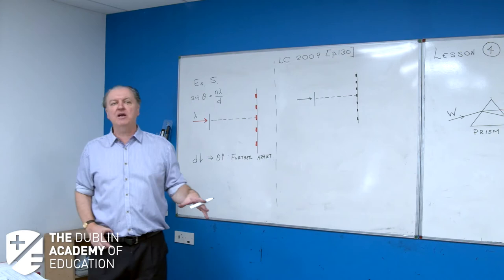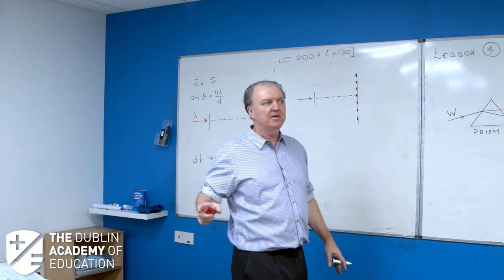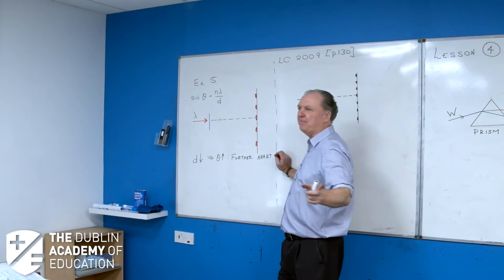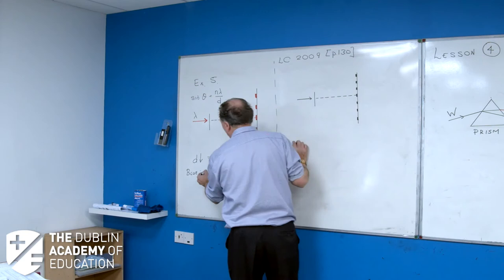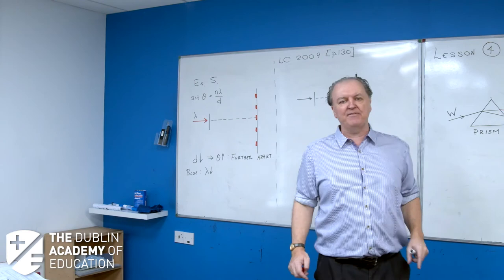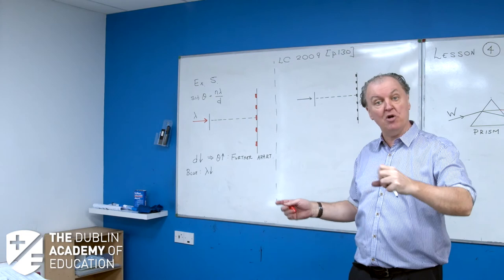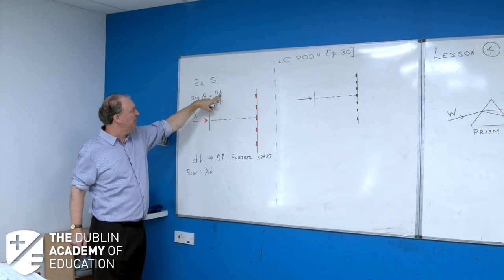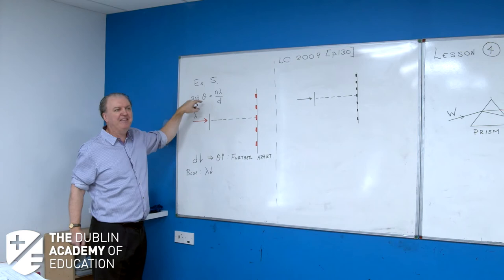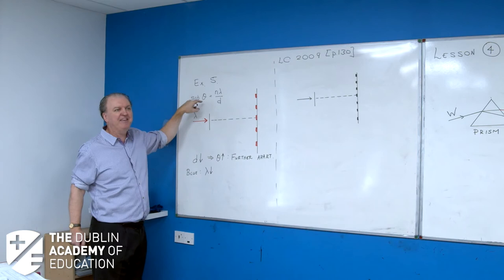Part C: what happens if blue light is used instead of red light? Blue light is close to violet, so it has a smaller wavelength. Using sinθ = nλ/d: if λ gets smaller, the fraction gets smaller, sinθ gets smaller, theta gets smaller — meaning the images are closer together. So if lambda goes down, theta goes down, and the images are closer together.